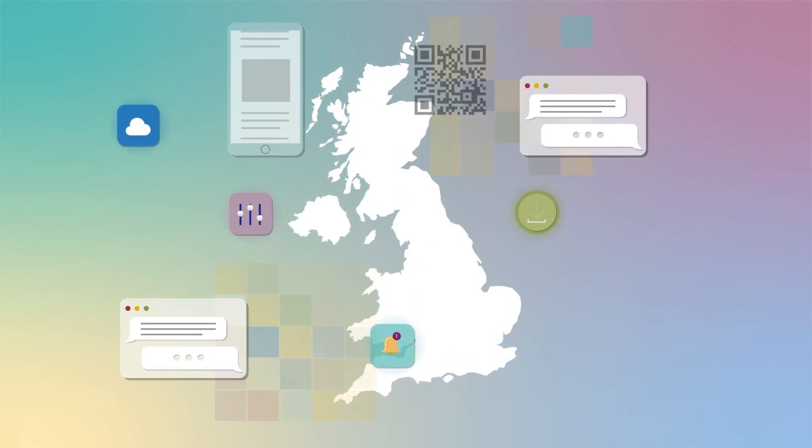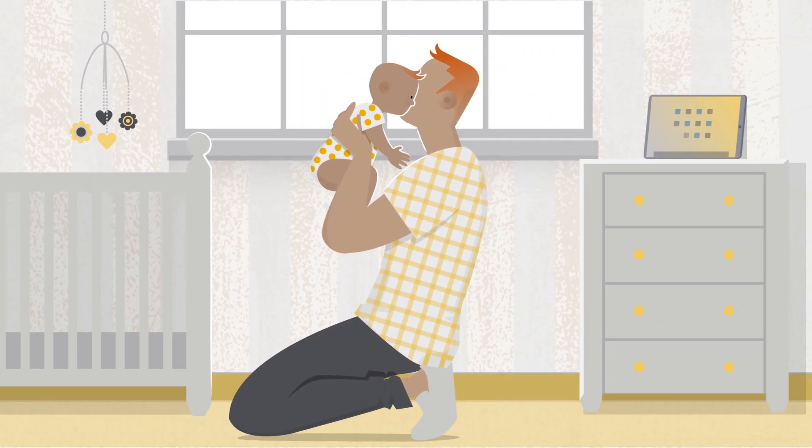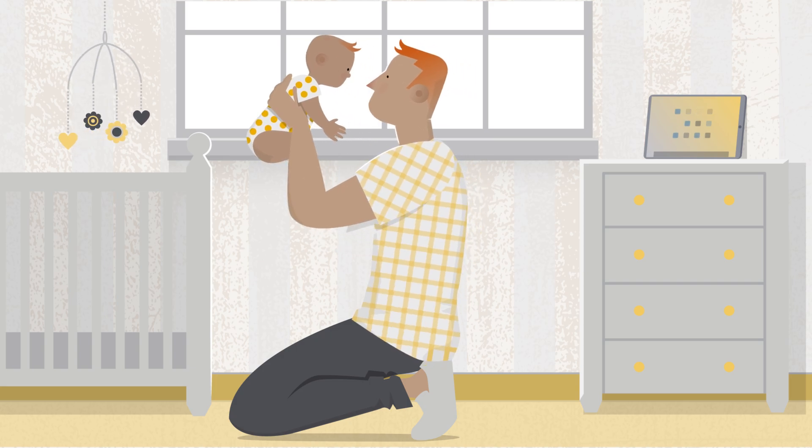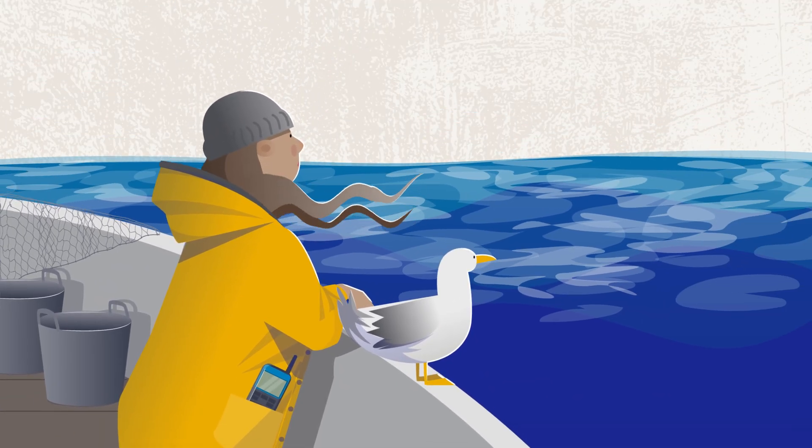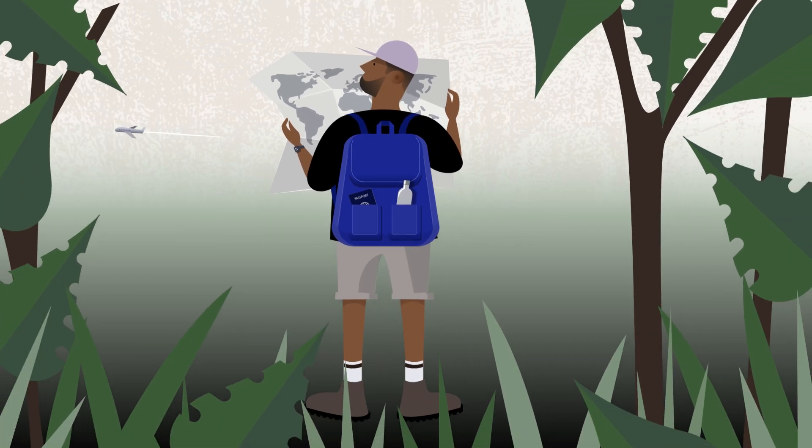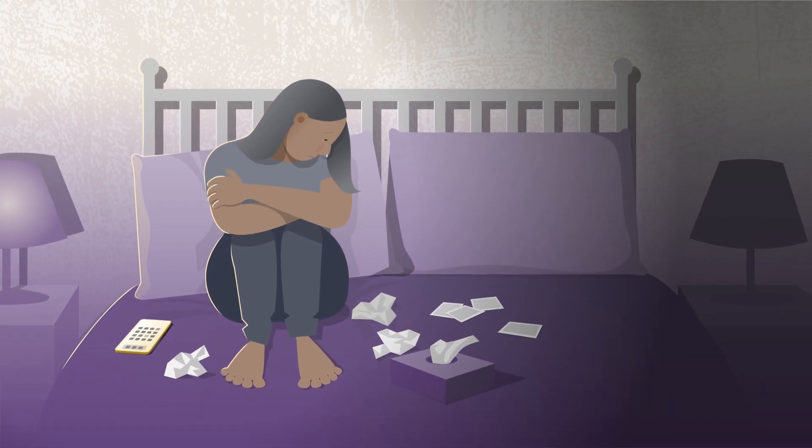Digital Government Services impact every single one of the 67 million people who live in the UK. From the new parent registering a birth, to the keen fisherman applying for their license, the worldly traveler looking to renew their passport, to the bereaved loved one registering a death.